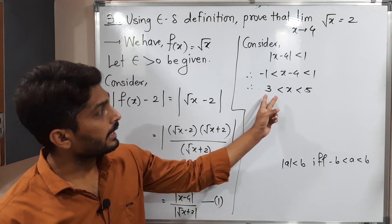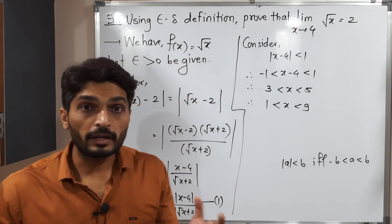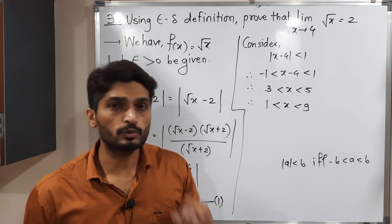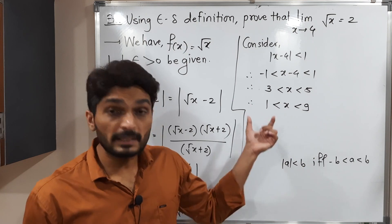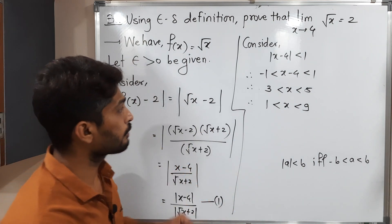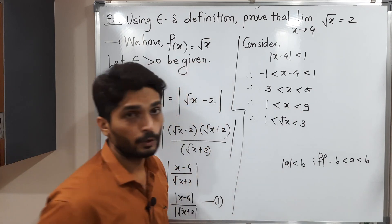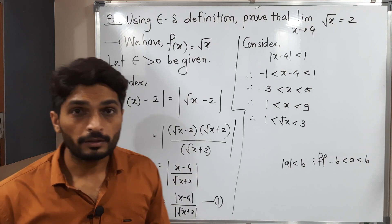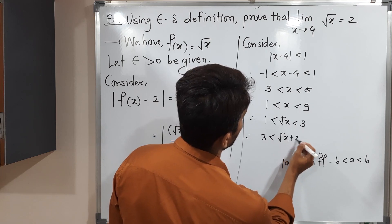Since x is between 3 and 5, we can write 1 < x < 9, choosing perfect squares on purpose — 1 is a square of 1 and 9 is a square of 3. Taking square roots of all sides: 1 < root x < 3. Since my target is to get root x + 2, I add 2 to all sides, giving 3 < root x + 2 < 5.